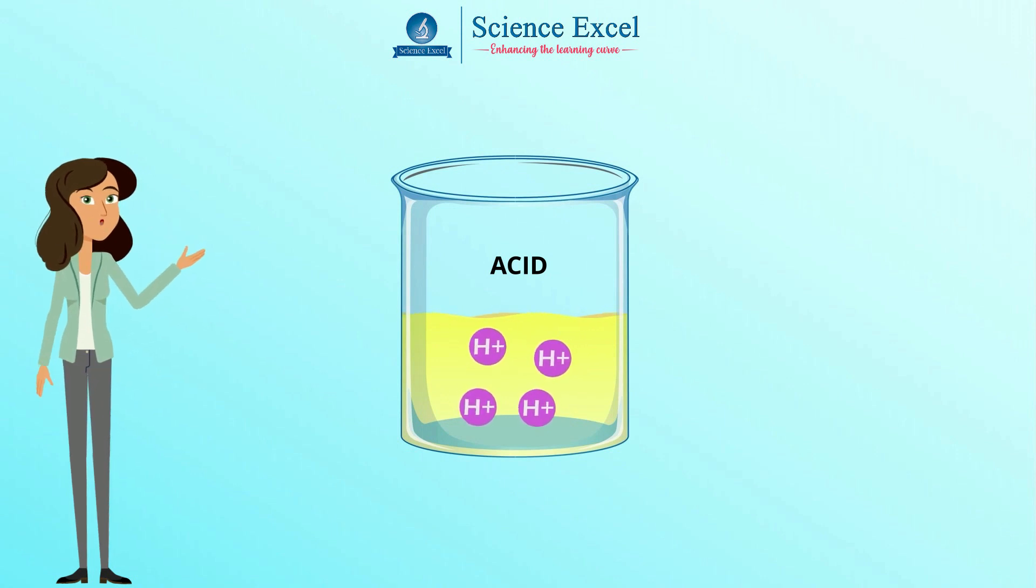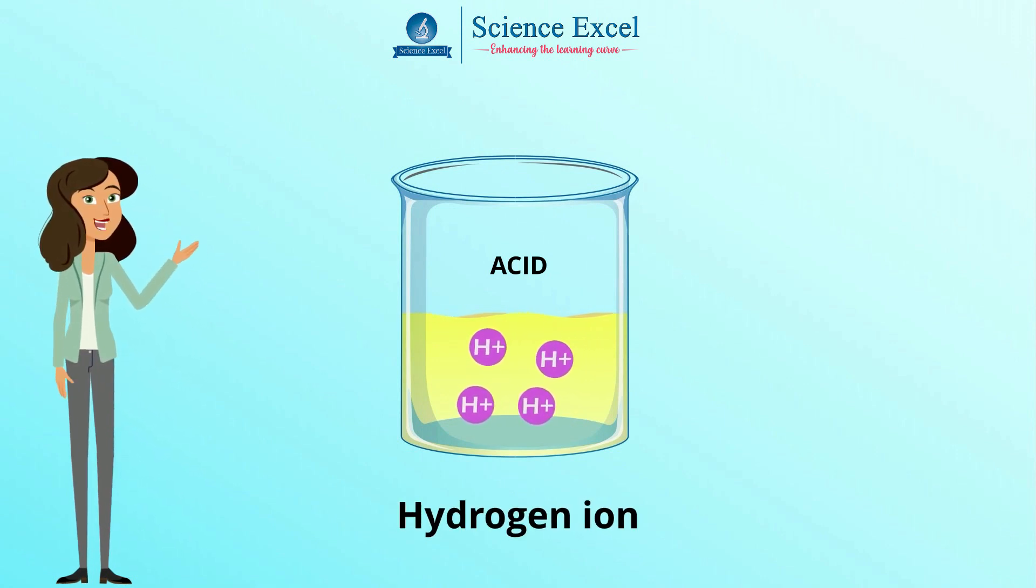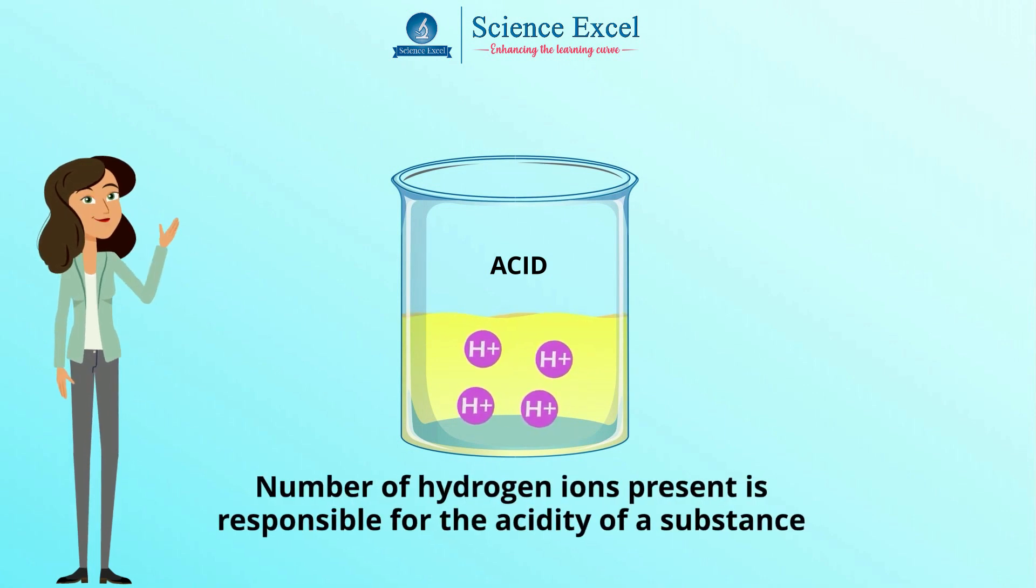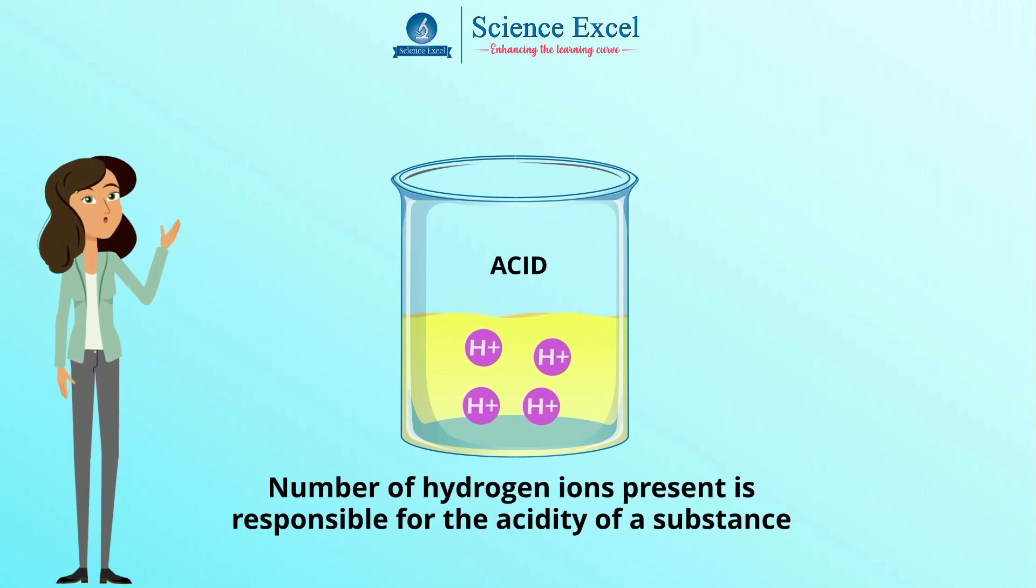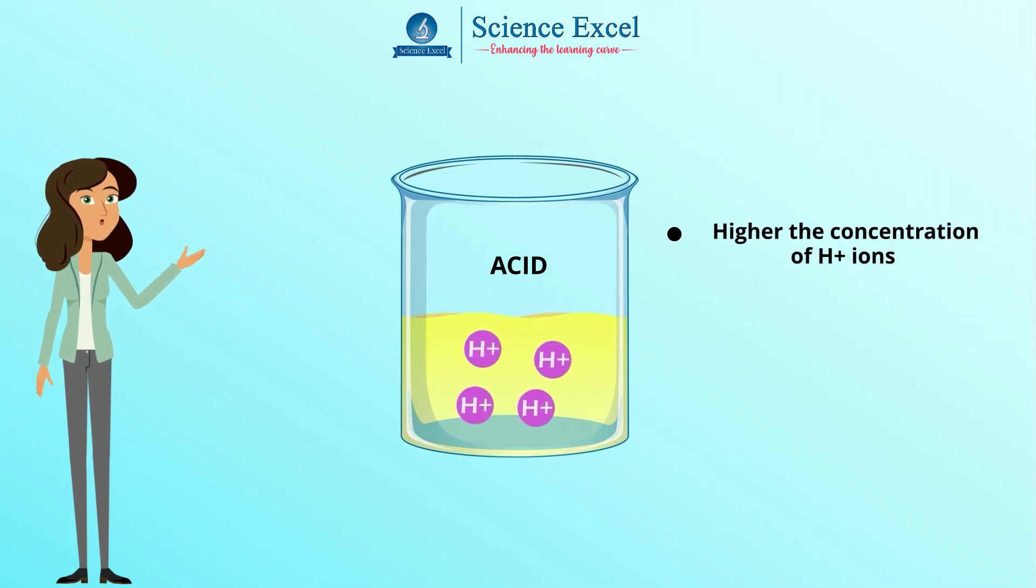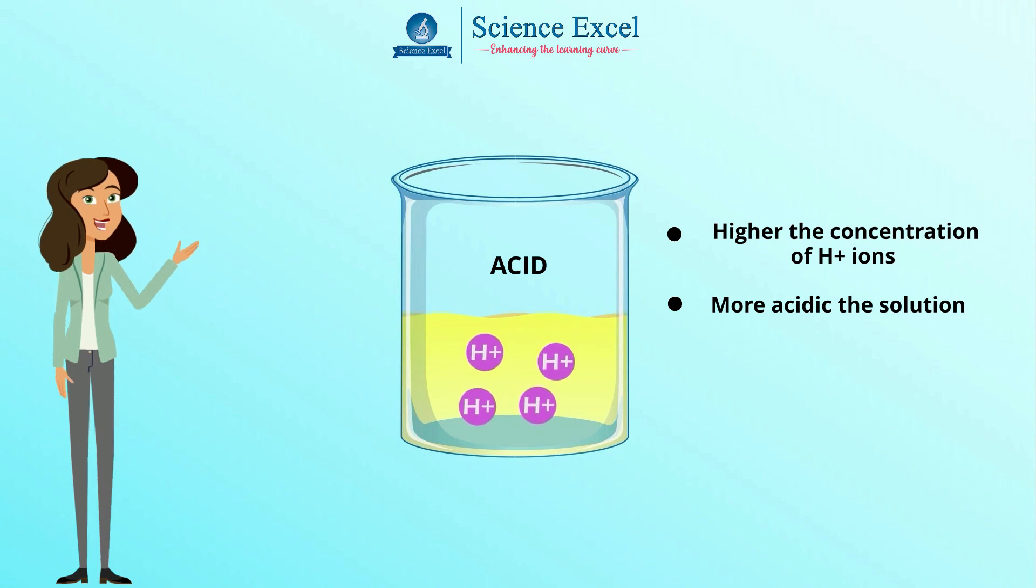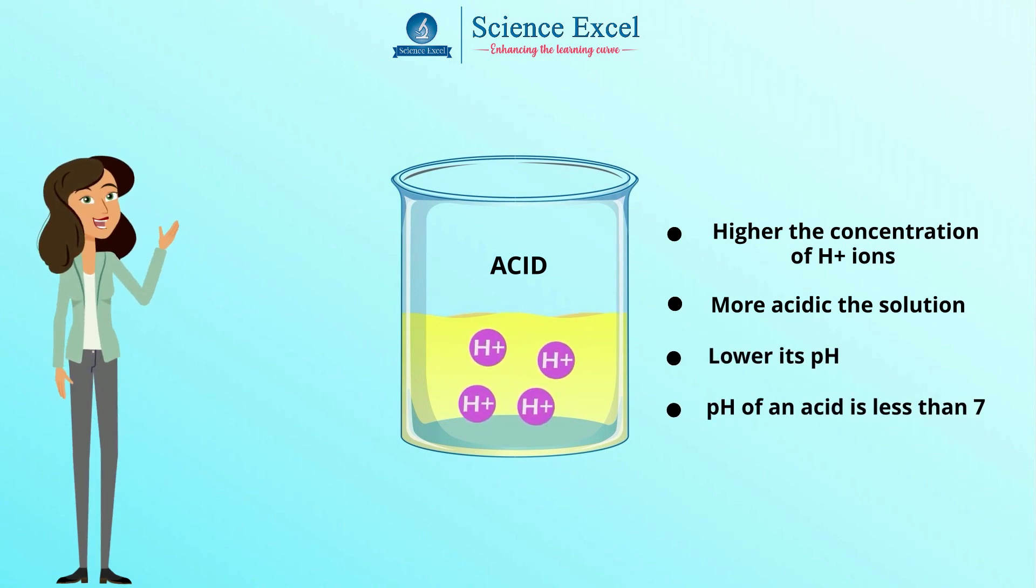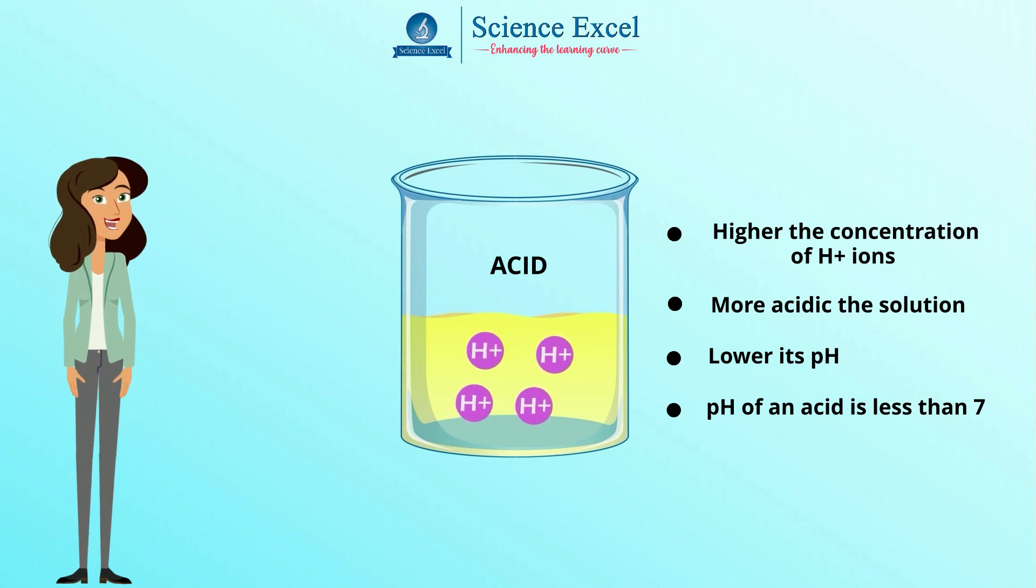An acid is a substance which yields a hydrogen ion when dissolved in water. The amount of hydrogen ions present in a solution is used as a measure of the acidity of a substance. The higher the concentration of hydrogen ions the more acidic the solution and the lower its pH. The pH of an acid is less than 7.